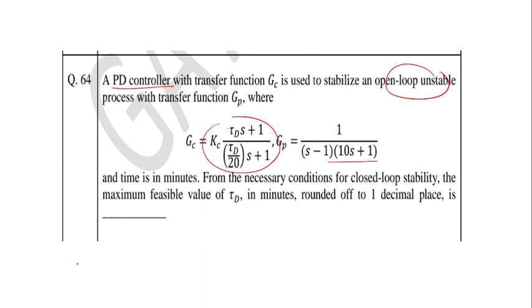So as you know, we should use the Routh stability criteria, and for this we should use the characteristic equation, which is 1 plus G open loop equals 0. And G open loop is G_P times G_C times G_F times G_M. We should assume G_F times G_M as 1, so it is simply 1 plus G_P times G_C equals 0.